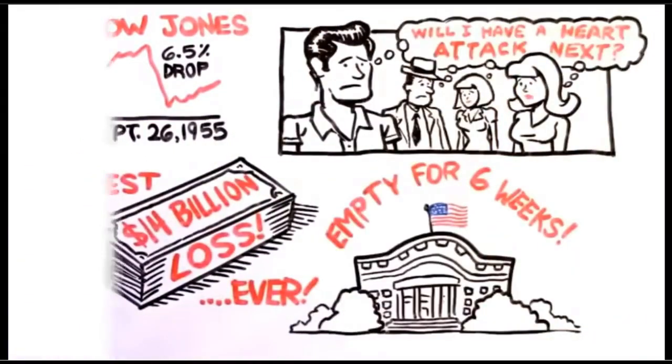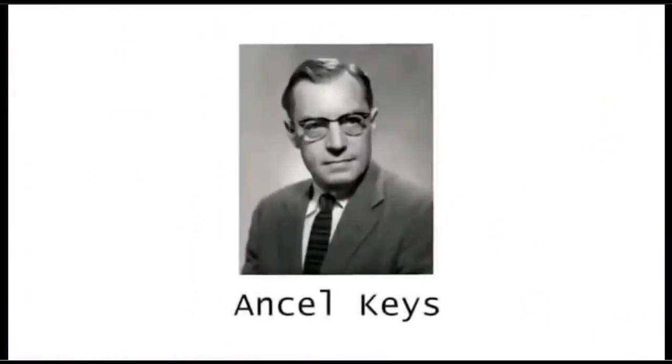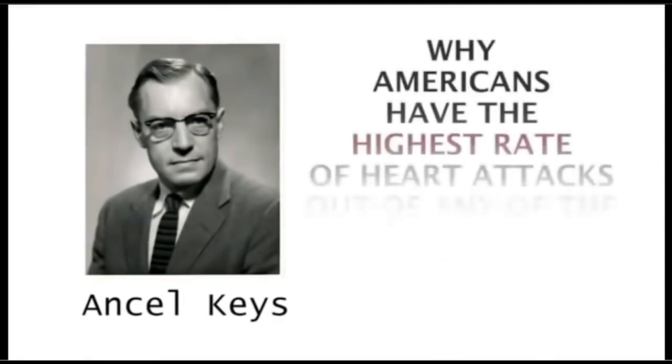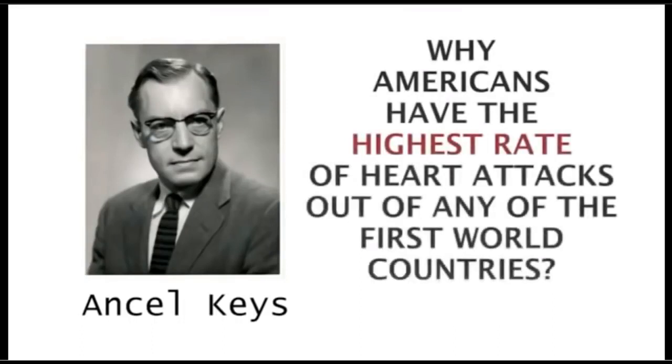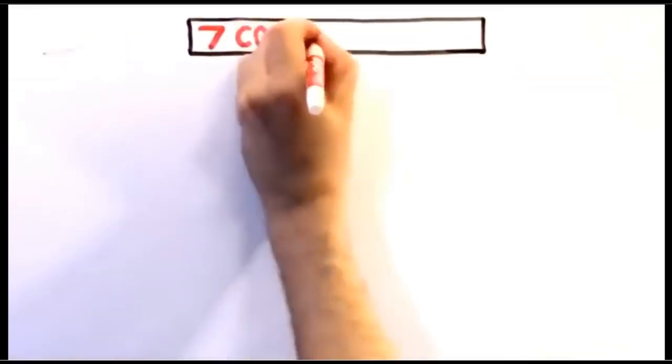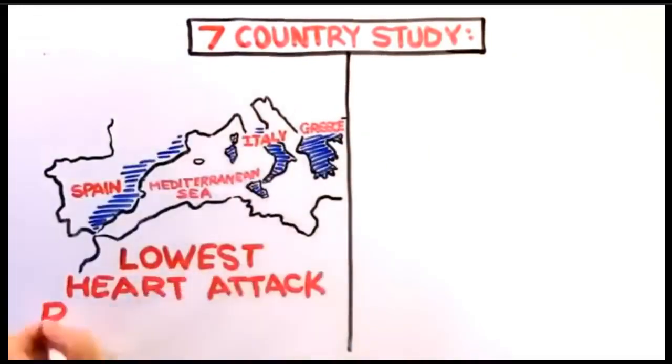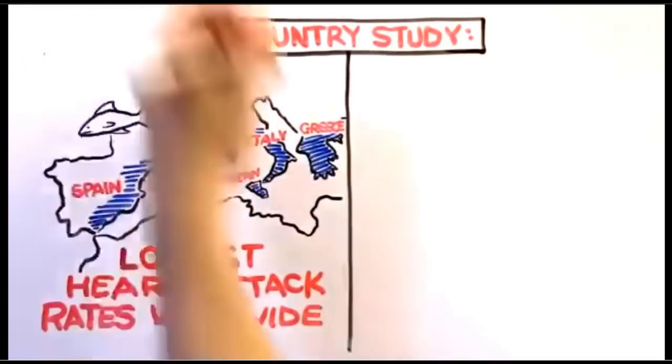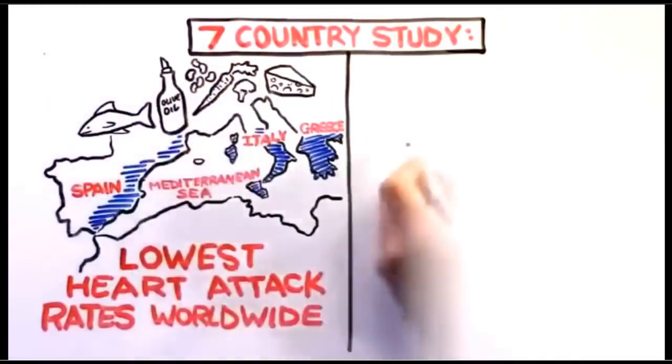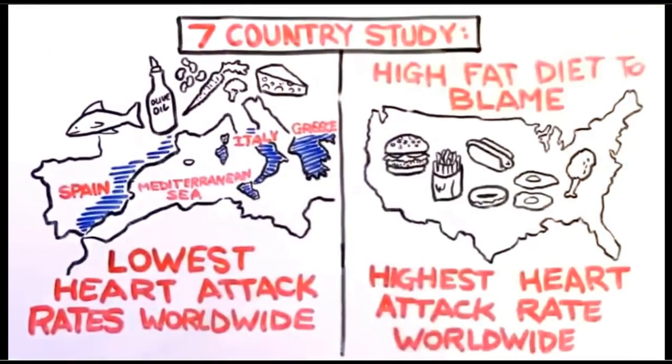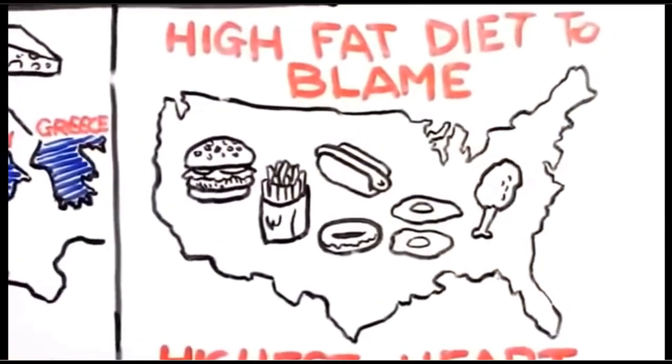Enter government researcher Ansel Keys. Mr. Keys was a Harvard-educated scientist who had helped design rations for the U.S. Army during World War II. Mr. Keys set out to discover why Americans had the highest rate of heart attacks out of any of the first world countries. In what would later become known as the Seven-Country Study, Mr. Keys discovered that Mediterranean nations had the lowest heart attack rates in the world. Their diet also contained the lowest amount of fat. He concluded, the American high-fat diet was to blame for our heart attack problem. Correct or not, finally, the public had an answer.